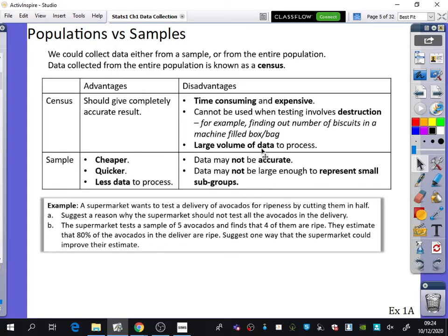The data may not be large enough to represent small subgroups. When the data may not be accurate: After elections, polling before the election tries to predict who will win. But when the result comes out, it sometimes hasn't reflected it carefully. That's because the election itself is more like a census of everyone, whereas polling is just a smaller sample that may not represent the whole group.